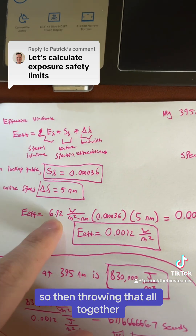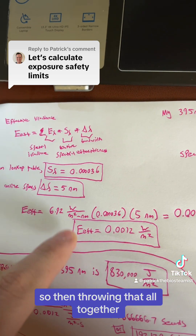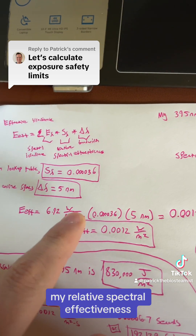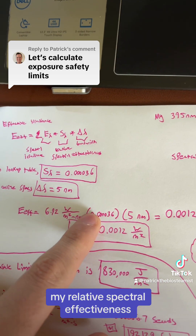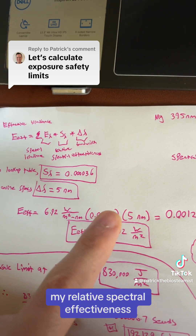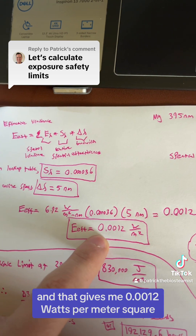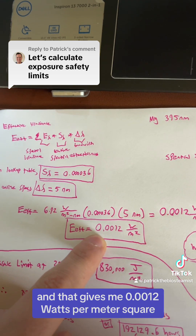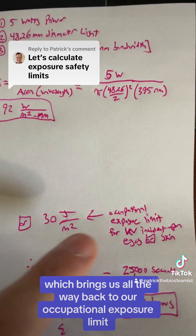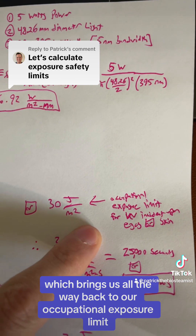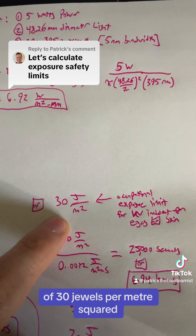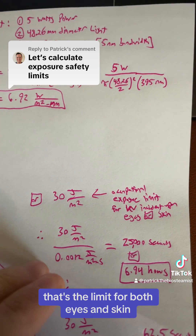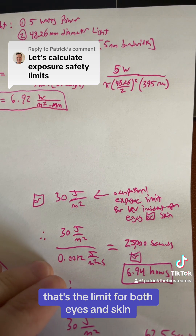Throwing that all together — effective radiance, relative spectral effectiveness, and bandwidth — gives me 0.0012 watts per meter squared, which brings us back to our occupational exposure limit of 30 joules per meter squared. That's the limit for both eyes and skin.